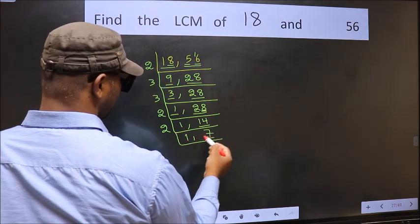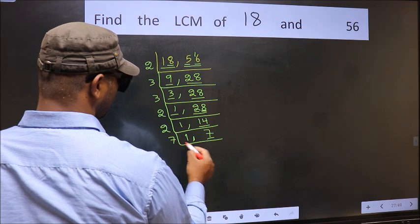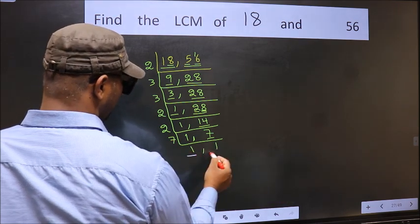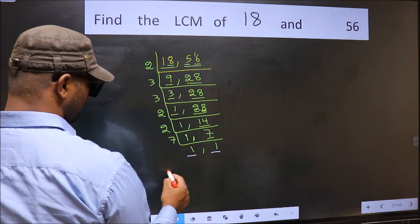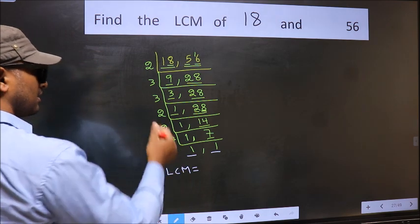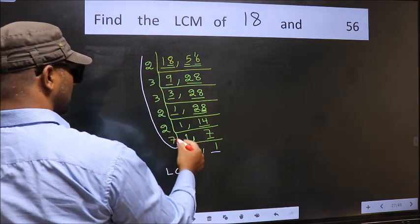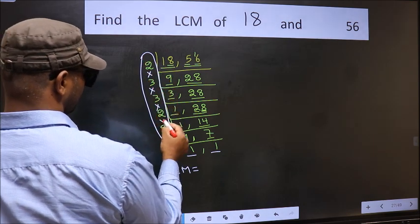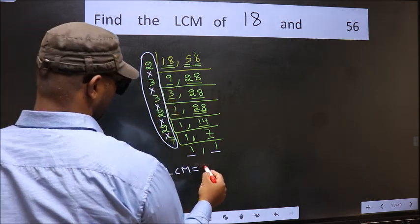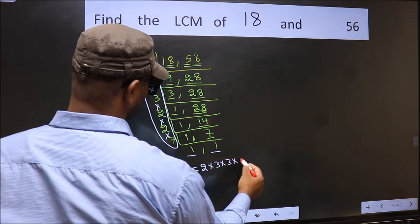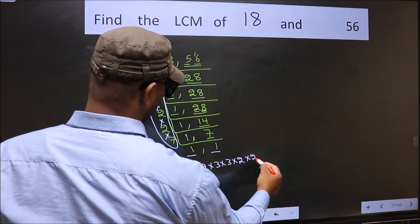Now we have 7. 7 is a prime number, so 7 ones, 7. So we got 1 in both places. So our LCM is the product of these numbers: that is 2 into 3 into 3 into 2 into 2 into 7.